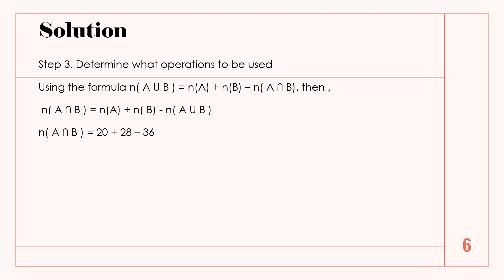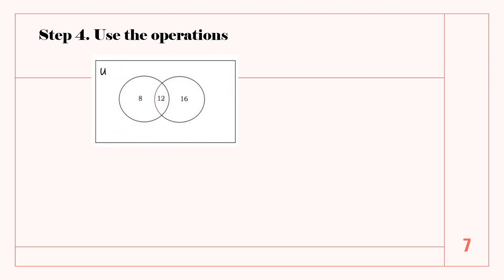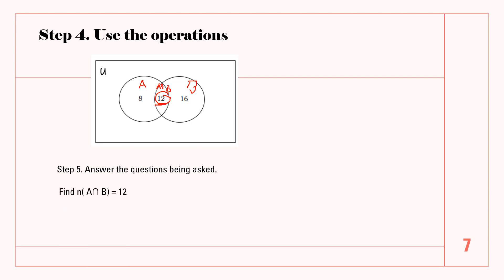So we have: cardinality of A intersect B equals 20 plus 28 minus 36, which gives us 48 minus 36. Therefore, the cardinality of A intersect B equals 12. This is your answer — the cardinality of A intersect B. So, the cardinality of A intersect B is equal to 12.